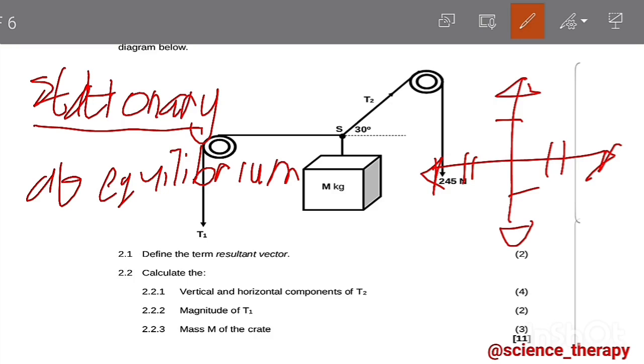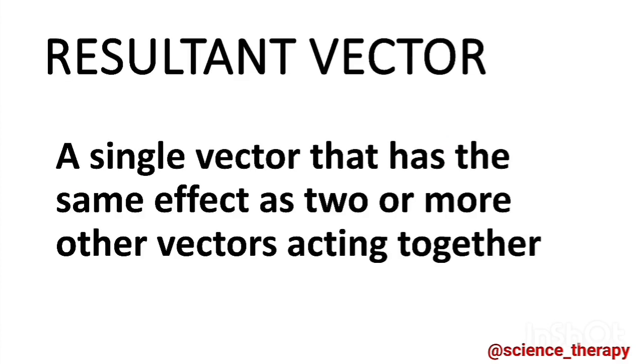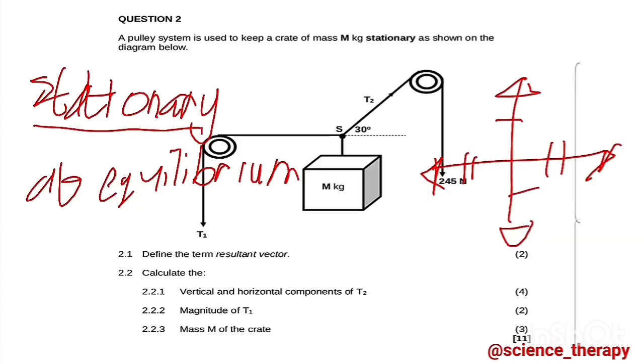Now let's see 2.1: it says define the term resultant vector. We have done that multiple times. A resultant vector is a single vector that has the same effect as two or more other vectors acting together. So you never forget that one, that's your free two marks.